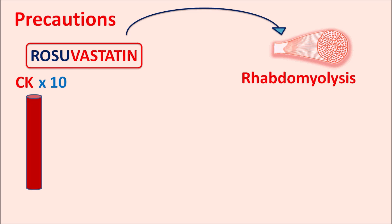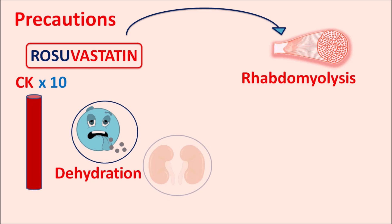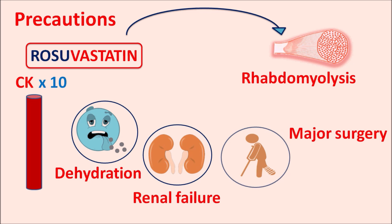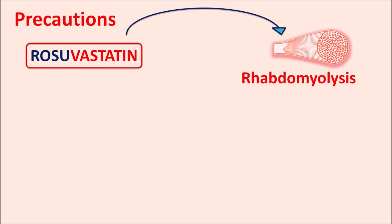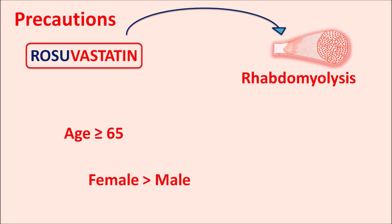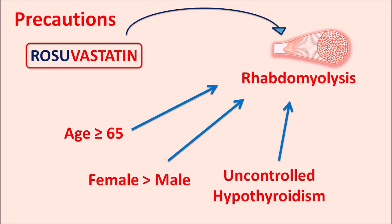Other coexisting factors can also increase the risk of rhabdomyolysis. If a patient has severe dehydration, renal failure, recent major surgery, trauma, severe hypotension, or sepsis, these conditions can further increase the rhabdomyolysis risk with rosuvastatin. Similarly, risk is higher in elderly patients (age greater than 65), female patients, and those with uncontrolled hypothyroidism. When prescribing this drug to such patients, care should be taken to monitor for any skeletal muscle damage.